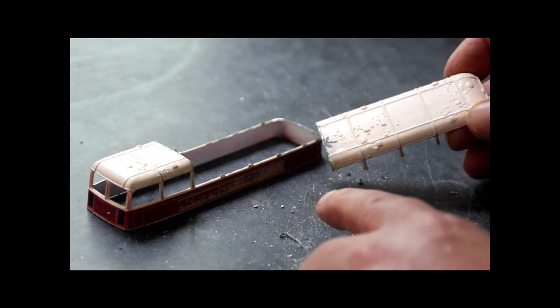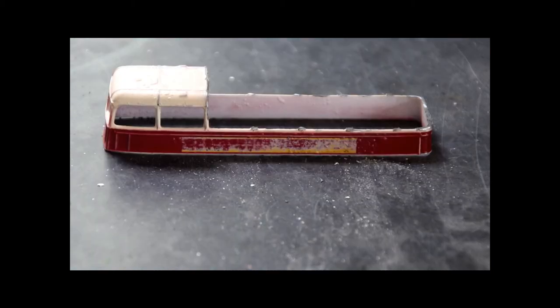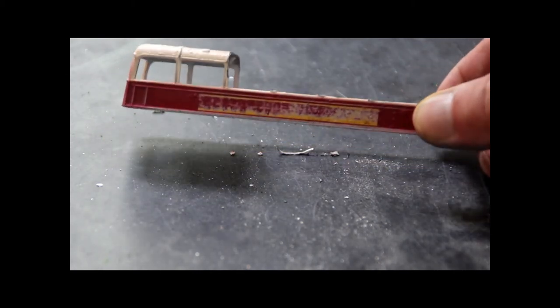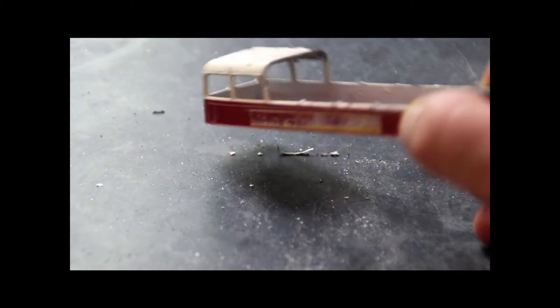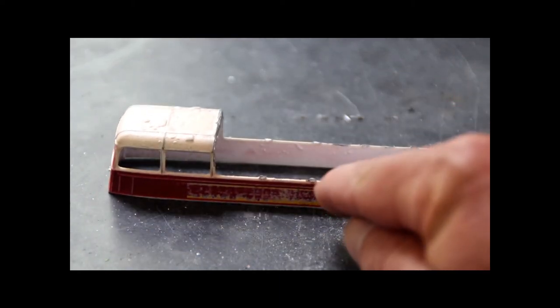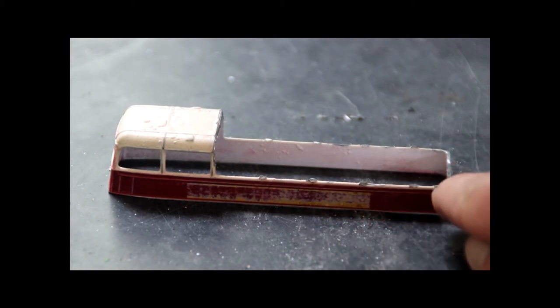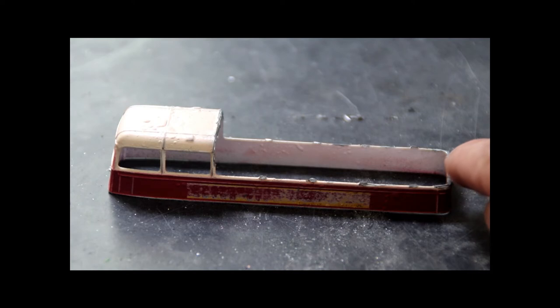What remains now is this and it's the roof and upper deck section we've cut it away. We're going to have to apply some file work to the areas here where the window pillars were to smooth things down and then we shall set about covering this piece in primer.